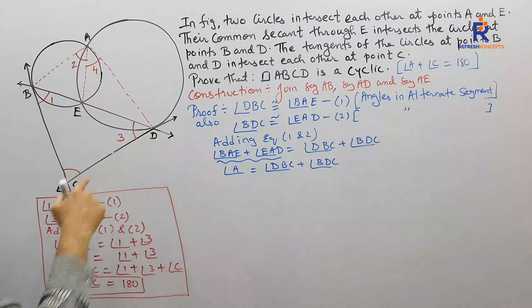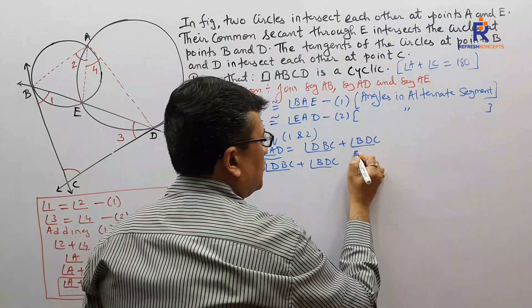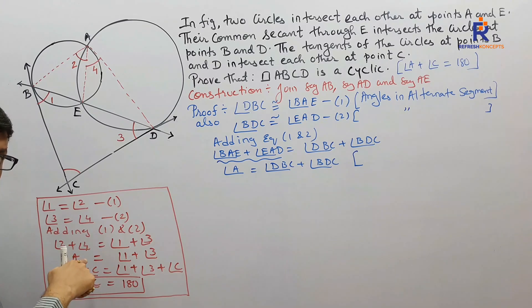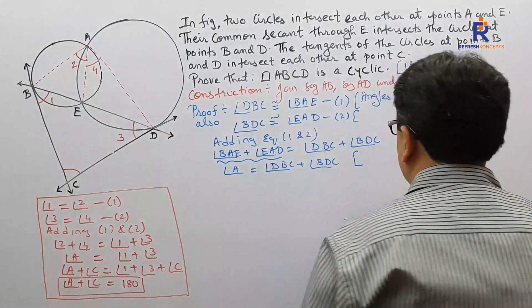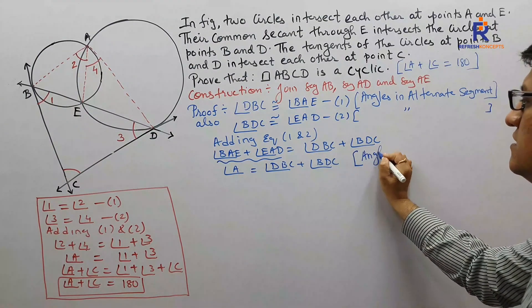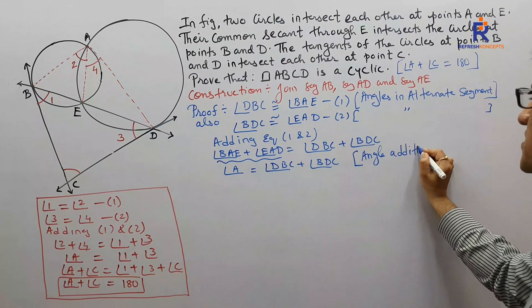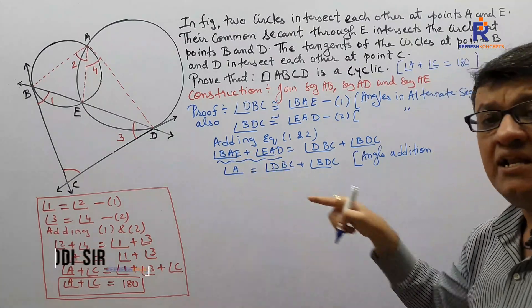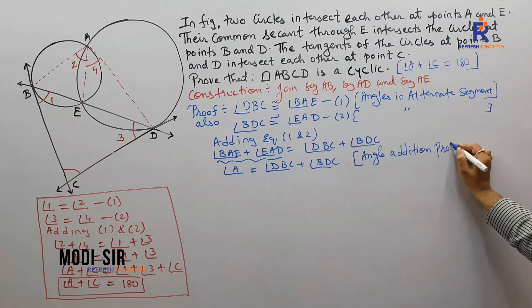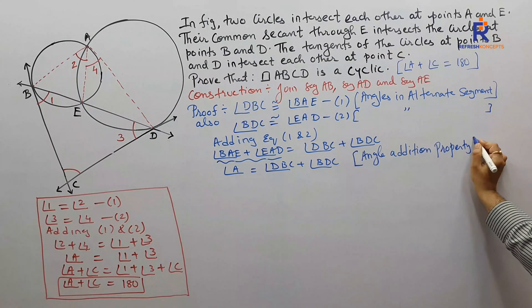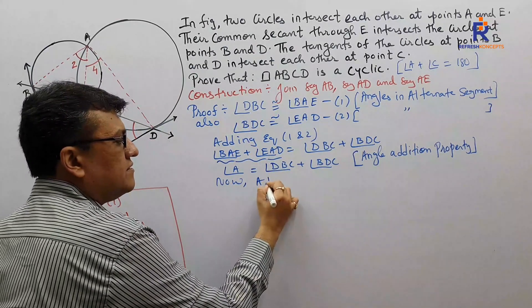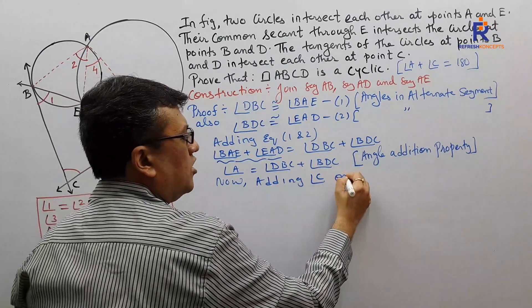Here I give one simple reason which is very much needed. The reason is angle addition property — because when I added these two angles I got angle A, and when I added those two angles I also got angle A. So angle addition property is the reason we need to give here. Now I shall say: adding angle C on both the sides.